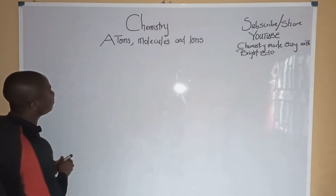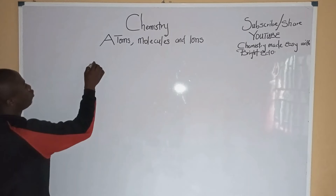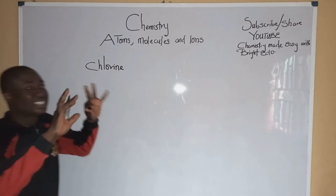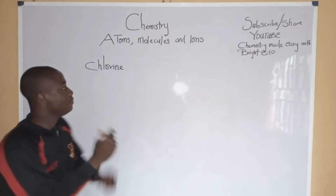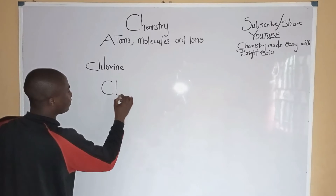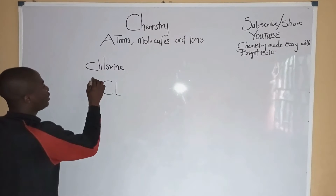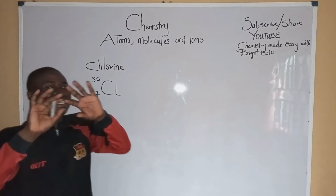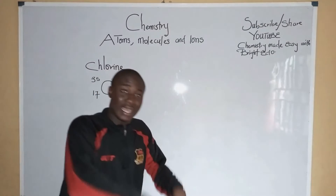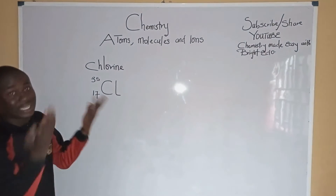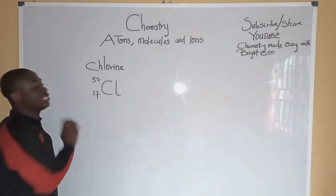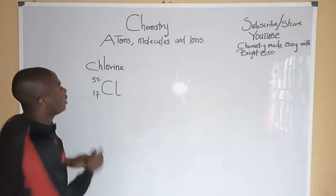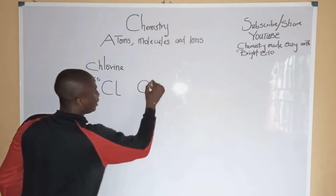For example, let's take an example like chlorine. Chlorine is an element. The smallest particle of chlorine is the chlorine atom — for example, Cl-35/17. An atom is the smallest particle of an element, which is chlorine for example, that can take part in a chemical reaction. So basically, you don't call it a chlorine molecule; you call it a chlorine atom.